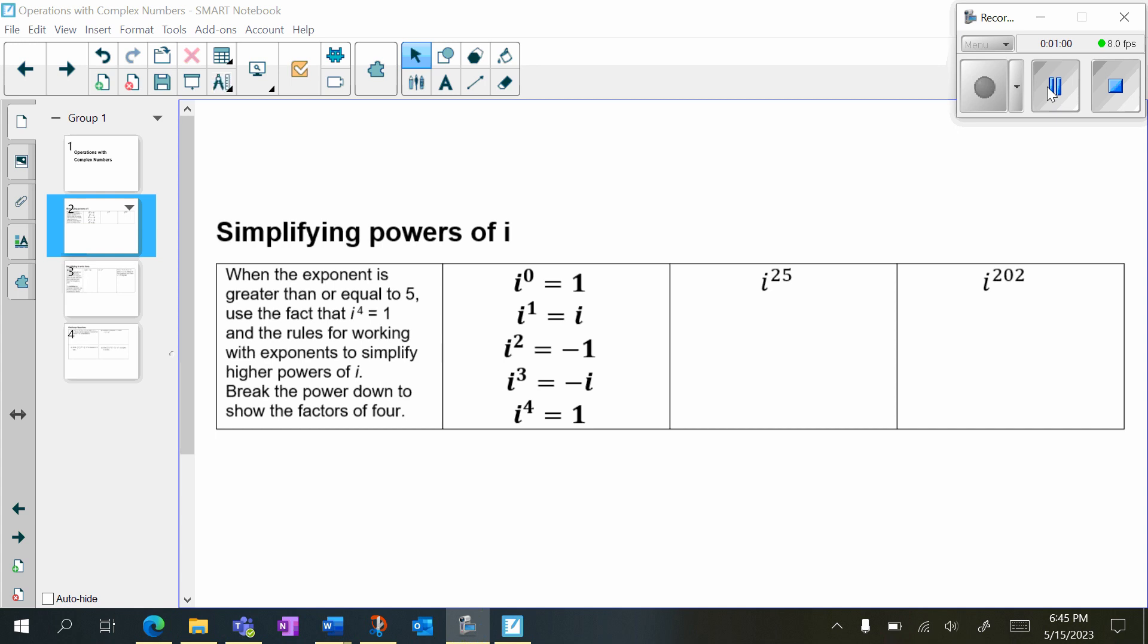So let's take a look at the first example, i to the 25th power. Now, if we use the pattern of 4, it's going to take us a while to get all the way to i to the 25th. So instead, we're going to use this shortcut.